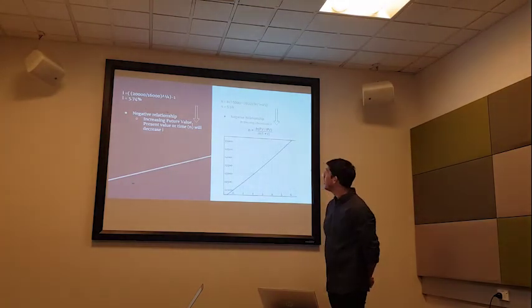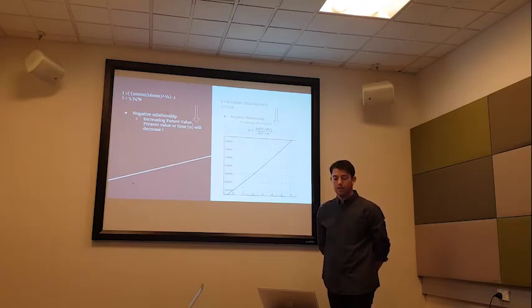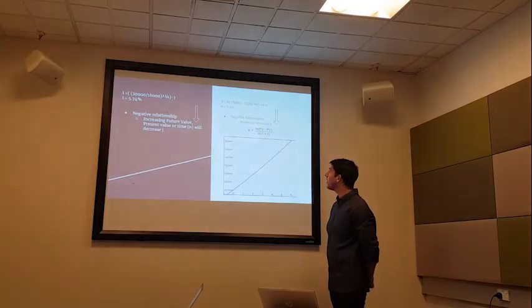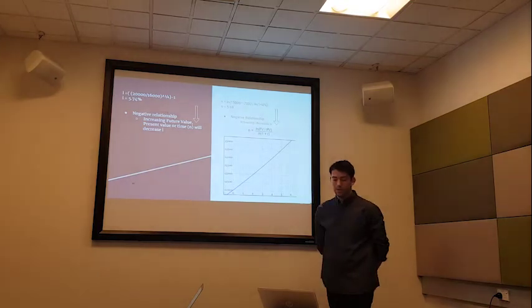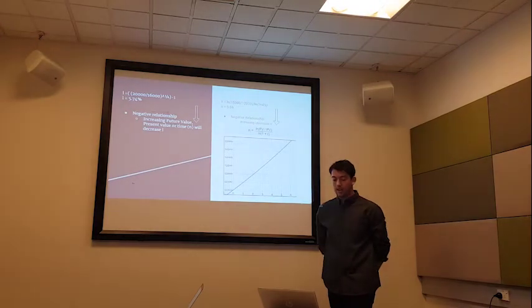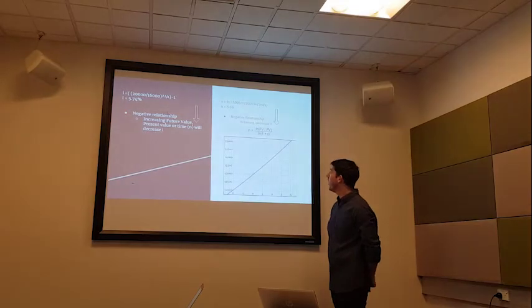And for the last one, about time N: Edward invested $12,000 in a fund offering a rate of return of 4% per year — approximately how many years will it take for the investment to reach $15,000? For calculating time N, it has a negative relationship again. So if you increase I, this will decrease N.